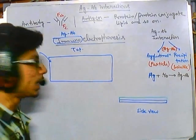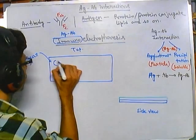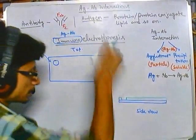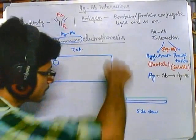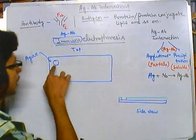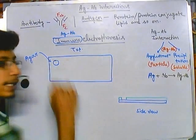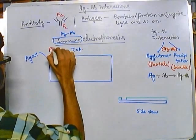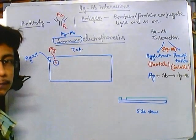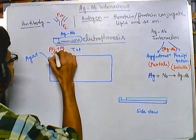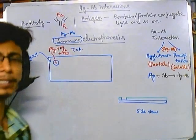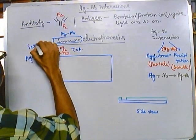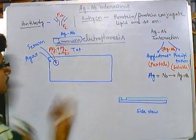After making the solid matrix, we need to make a well at a particular position. The well is created by taking a puncher and punching a hole onto the solid surface. After creating the well, we add the antigen — a mixture of antigen 1, antigen 2, antigen 3 — or it can be serum containing antibodies, antigens, and other components of serum.